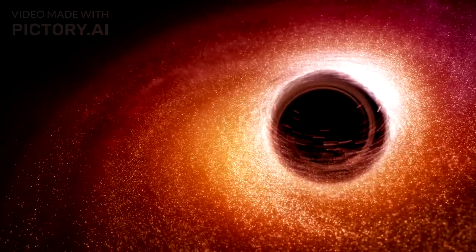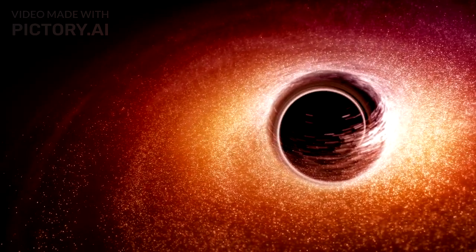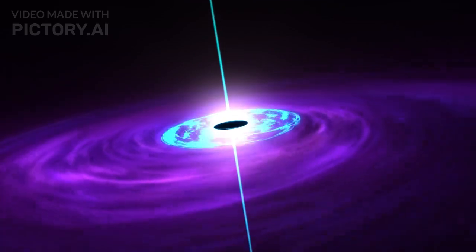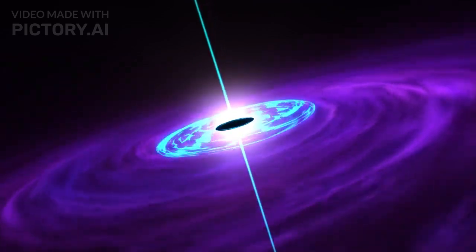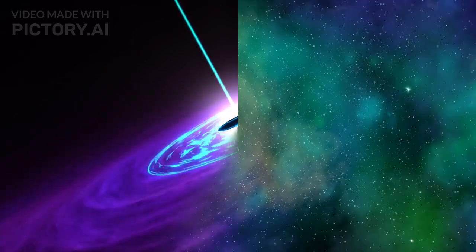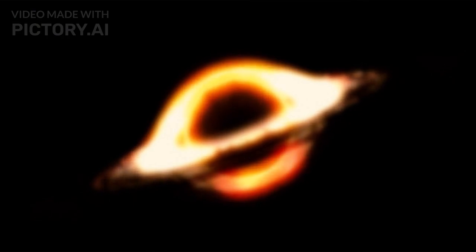However, we can detect their presence by observing how they interact with their surroundings. Matter falling into a black hole forms an accretion disk, which emits X-rays and other high-energy radiation that we can detect with telescopes. We can also study black holes through gravitational lensing, where the light passing near a black hole is bent by its gravity, creating multiple images of objects behind it.